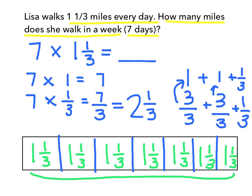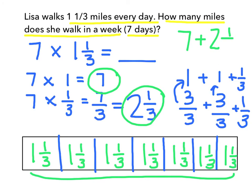The last part of what I need to do to solve this problem is add up my whole numbers and my fraction part. So when I go ahead and add seven plus two and one third, I'm going to get my final answer, which is nine and one third.